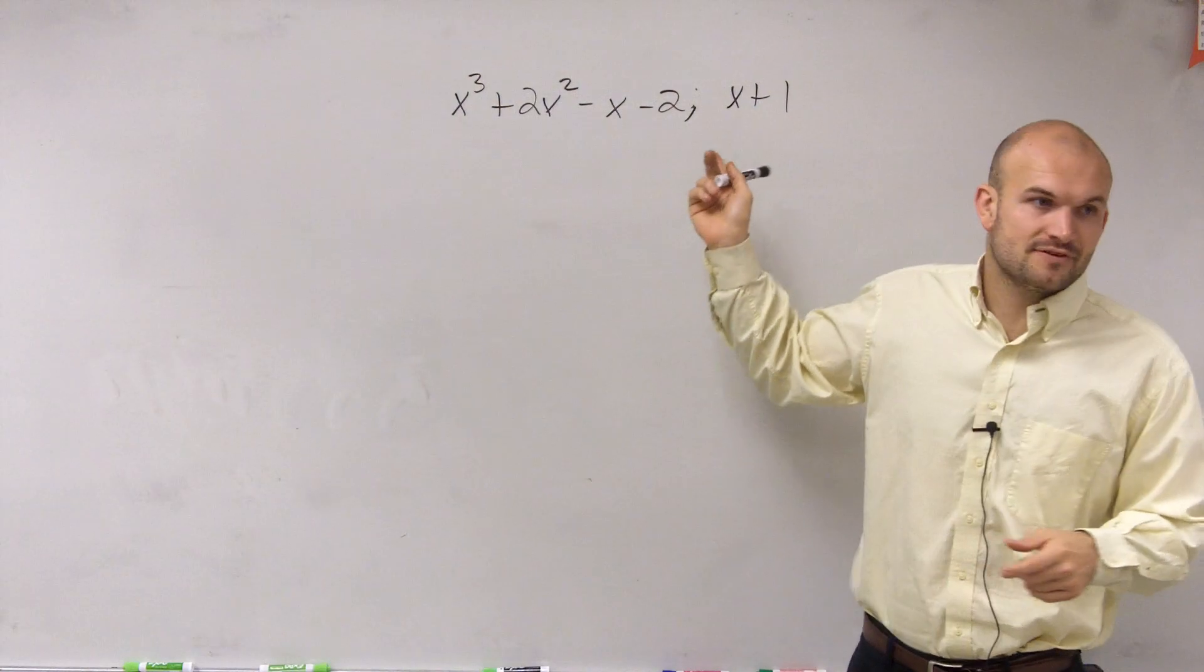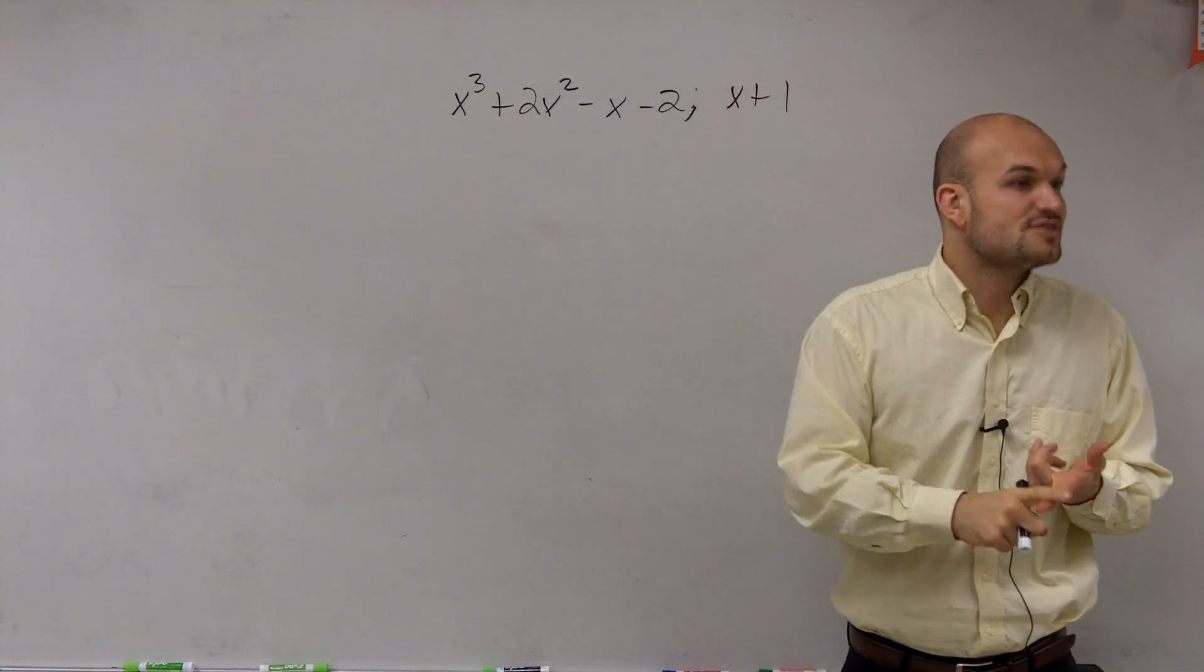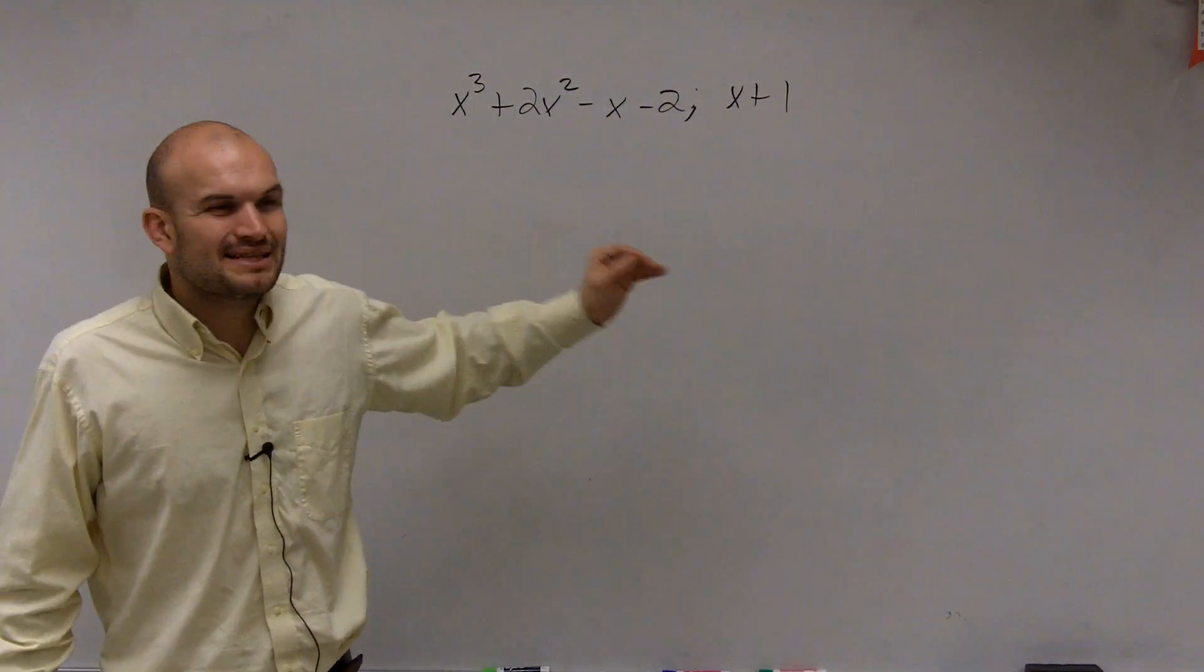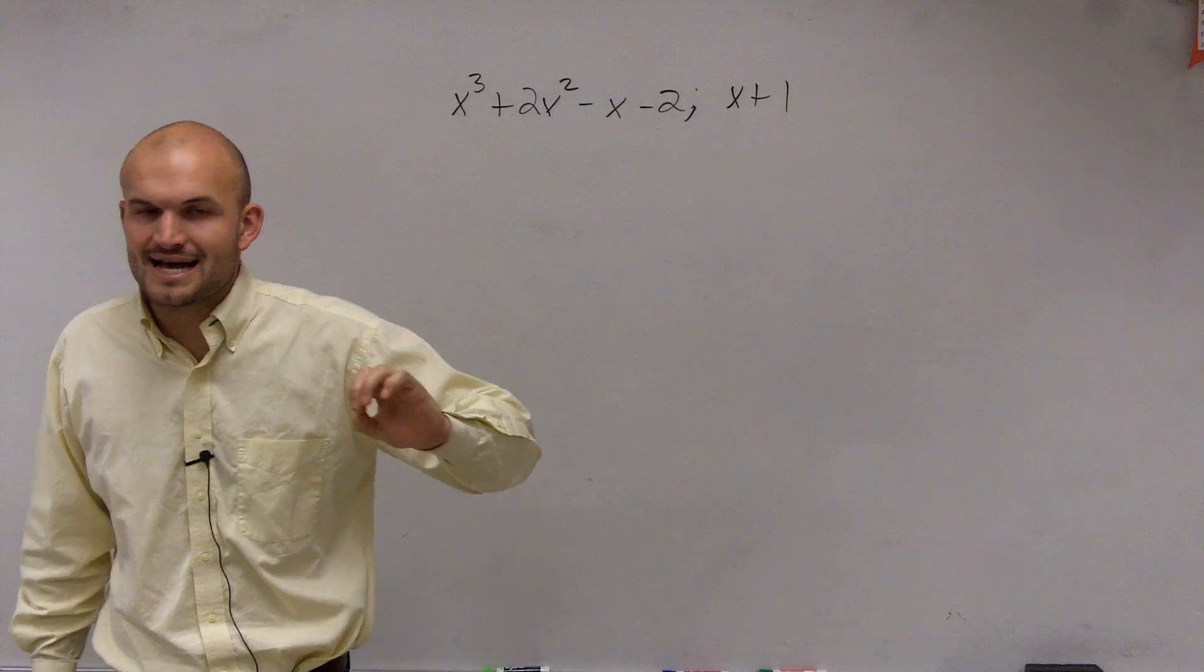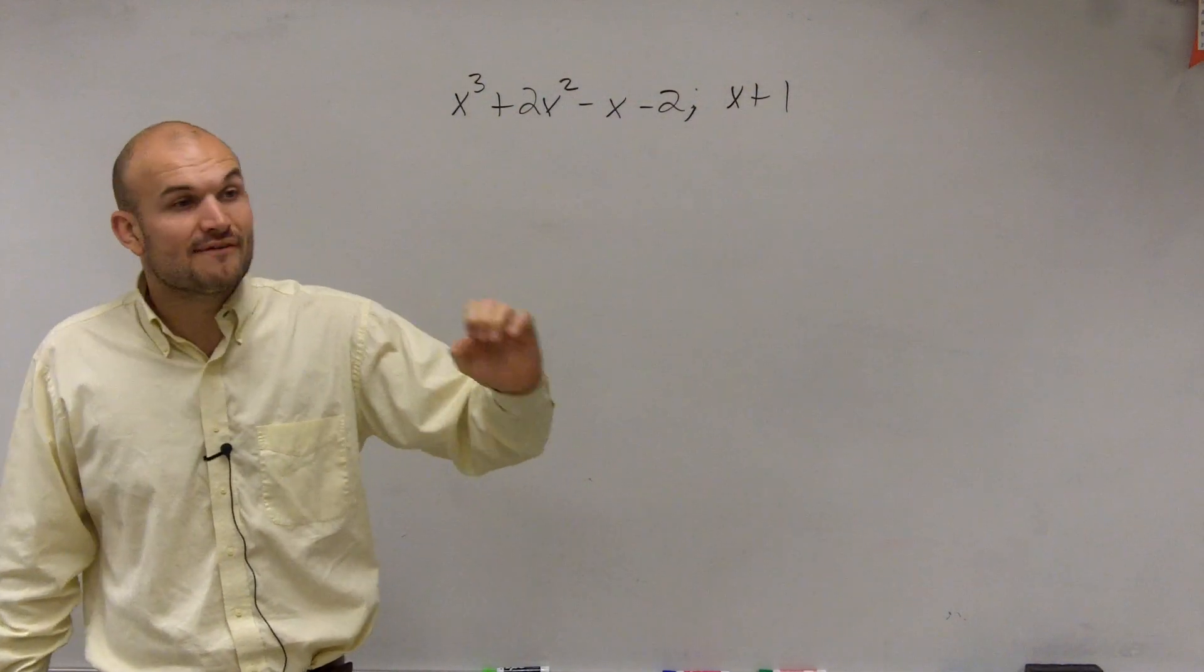If I plug in f of negative 1, I'm going to have that equal to 0. Now, we could just plug in f of negative 1 and know it's going to get 0, but that's not going to help us out because what the question is asking is find the remaining factors. We want to find all the factors.